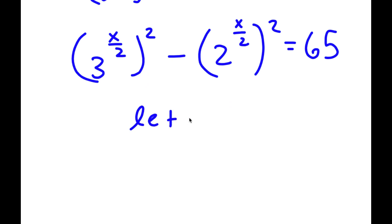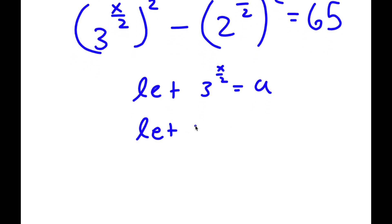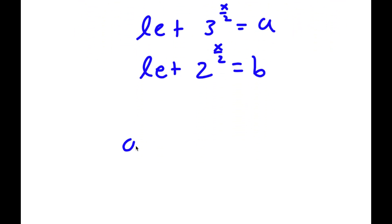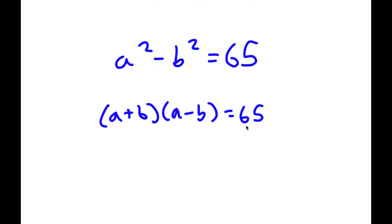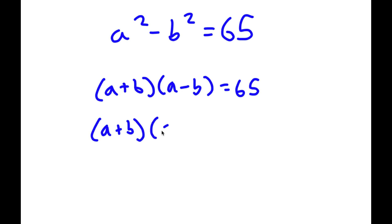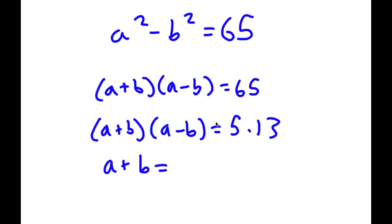Now I'm going to let 3 to the power of x over 2 equal a, and 2 to the power of x over 2 equal b. So now I have a squared minus b squared is equal to 65. That's the same as a plus b times a minus b equals 65. And 65 I can rewrite as 13 times 5. Since a plus b is greater than a minus b, a plus b equals 13 and a minus b equals 5.